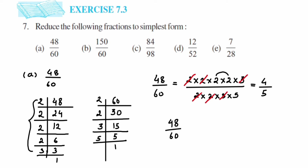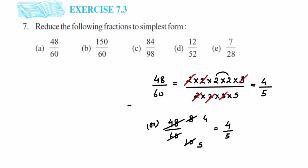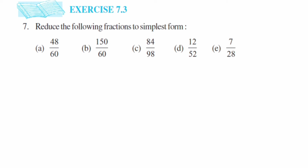Alternatively, you can use the cancellation method directly. For 48 and 60, cancel in the 6 table: 6 × 8 = 48, 6 × 10 = 60. Then 8 and 10 can be cancelled in the 2 table: 2 × 4 = 8, 2 × 5 = 10. We get 4/5. So whether you cancel in the 2 table or 4 table, it's your choice — at the end you get the same answer: 4/5.